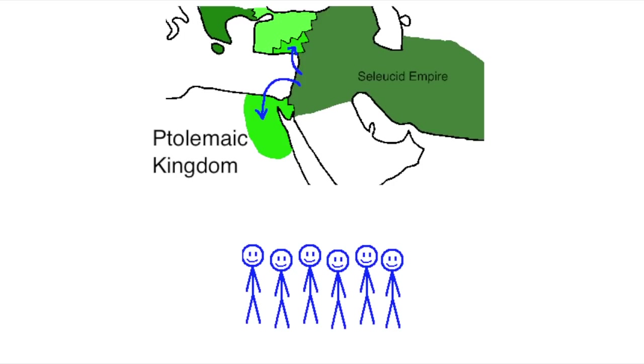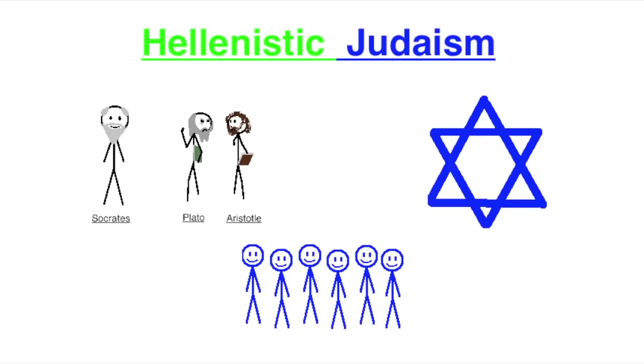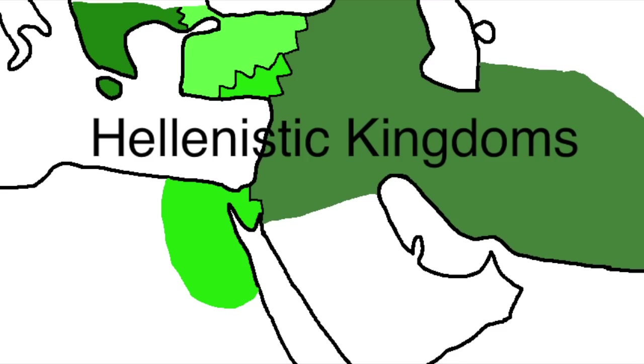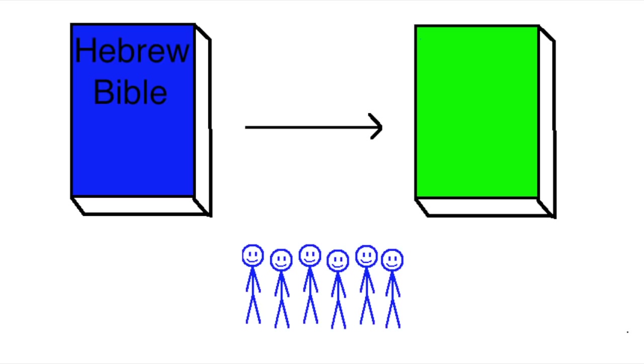Many Jews, especially those who had migrated to the Ptolemaic Kingdom, another Hellenistic Kingdom that controlled Egypt and parts of Anatolia, sought to combine traditional Jewish theology with Greek philosophical ideas, a movement known as Hellenistic Judaism. Linguistically, the Hellenistic Jews spoke a dialect of Greek known as Koine Greek, which was a lingua franca of most of the Hellenistic kingdoms, and they're most famous for translating the Hebrew Bible into this dialect of Greek in a translation known as the Septuagint.